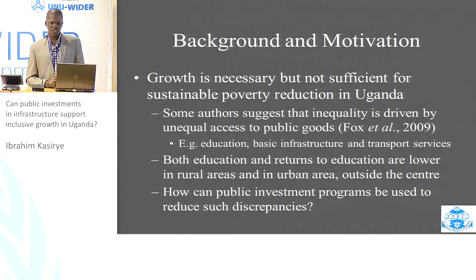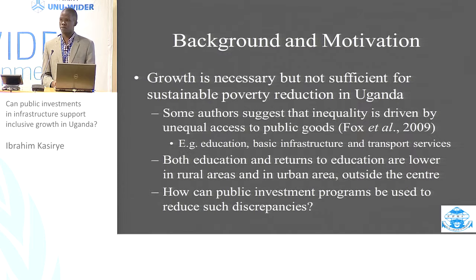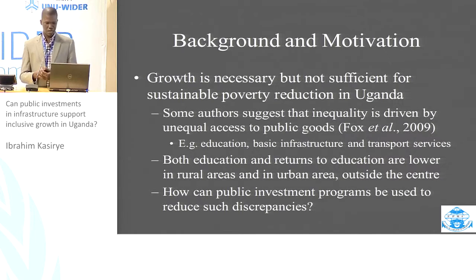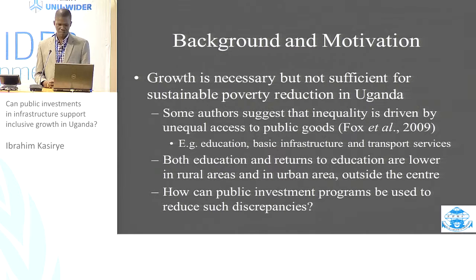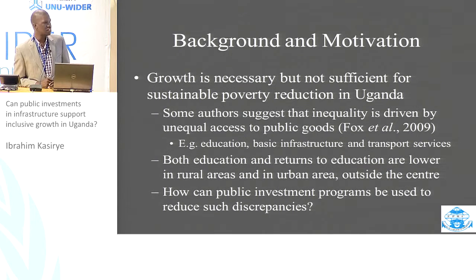Previous authors have shown that growth is necessary, but not a sufficient condition for sustainable reductions. Authors also point to the fact that the increasing inequality we see in Uganda is partly driven by unequal access to public goods — that is roads, both tarmac, maram roads, and all-weather roads, as well as access to infrastructure services. Previous literature also shows that returns to education are lower in rural areas and in urban areas outside the center. So the main question is: how can public investments be used to reduce such discrepancies? This is what we try to answer in this paper.